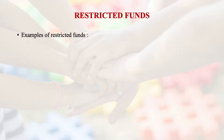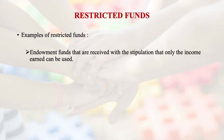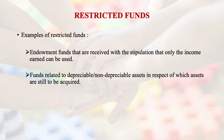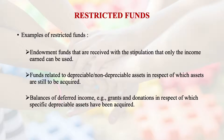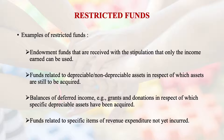Examples of restricted funds include endowment funds, which are received with the stipulation that only the income earned can be used. Some funds are related to depreciable or non-depreciable assets in respect of which assets are still to be acquired. There are also balances of deferred income like grants and donations for which specific depreciable assets have been acquired, and funds related to specific items of revenue expenditure not yet incurred.